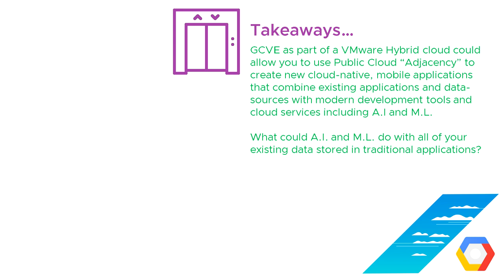The question is: what could AI and ML do with all of your existing data stored in traditional applications? Certainly for some of the people I work with day-to-day, they're using applications where the vendor doesn't exist anymore, so there's no way that application can be updated or modified. But it is a rich source of information gathered over years and years. The takeaway is that there are other ways of doing this — you can build a hybrid app using the best of modern technologies and the wealth of existing data you already have in traditional or legacy applications. Thank you very much for your time, I hope you found that useful.